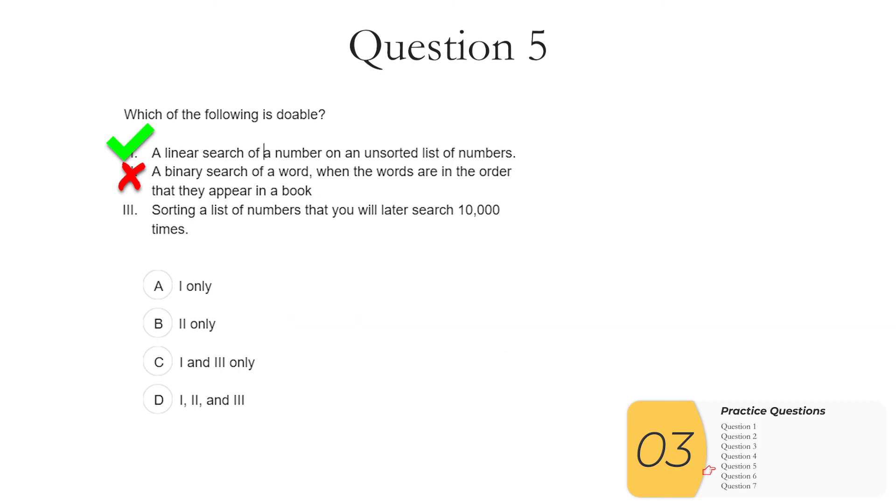Three. Sorting a list of numbers that you will later search 10,000 times. This is something you can definitely do. You can always sort a list. It's not going to make sense to sort that list unless you search a lot of times. But you could always sort the list. So this is also true. So the answer is C, one and three only.